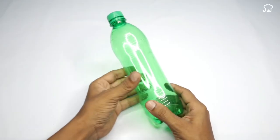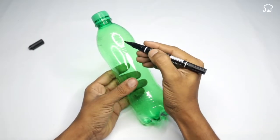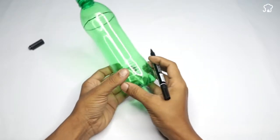To start, we take a plastic bottle of water or soda. With the help of a marker, we will draw some lines in a circle at both ends around the bottle, as shown on the screen.